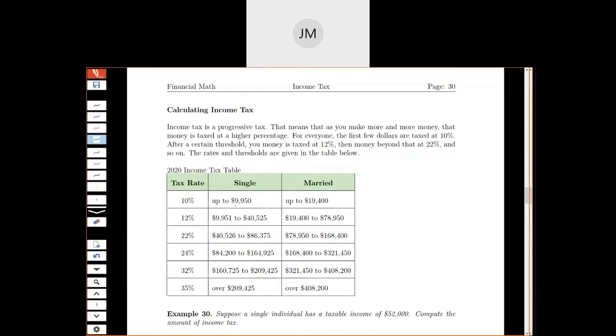So for everyone who's single, your first $9,950 is taxed at 10%, no matter who you are. The money that you make past that is taxed at 12%, up to $40,525. And then after that, it's taxed at 22%, and so on.